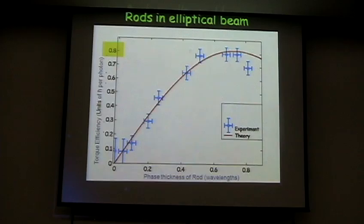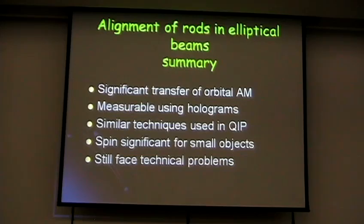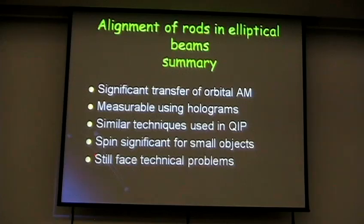We found a method for evaluating orbital angular momentum transfer. When looking at the alignment of rods in an elliptical beam, there is significant transfer of orbital angular momentum. However, when I start doing this under the microscope, it doesn't work — it's very difficult to see clear pictures through a high numerical aperture objective, because you're looking at the focal region rather than the far field.